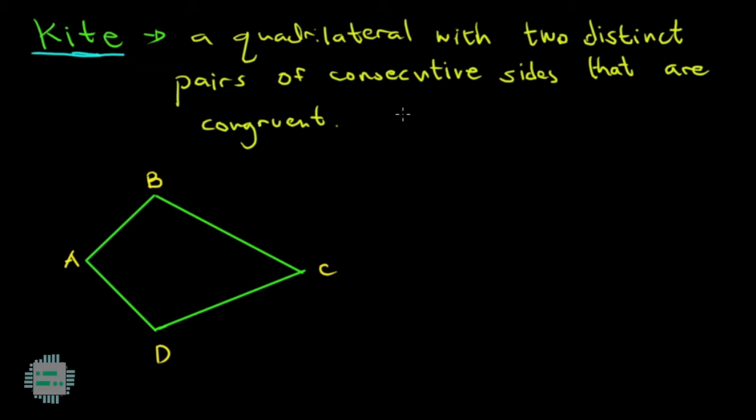Ang kite, yung magkatabi na sides ang magkasukat at meron siyang dalawang pares ng ganoon. Kung itong ABCD ay isang kite, this side AB should be congruent to side AD.